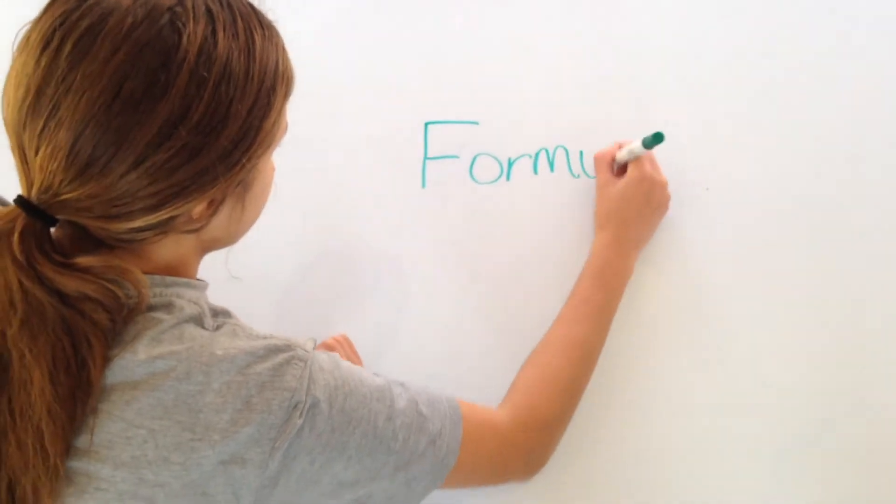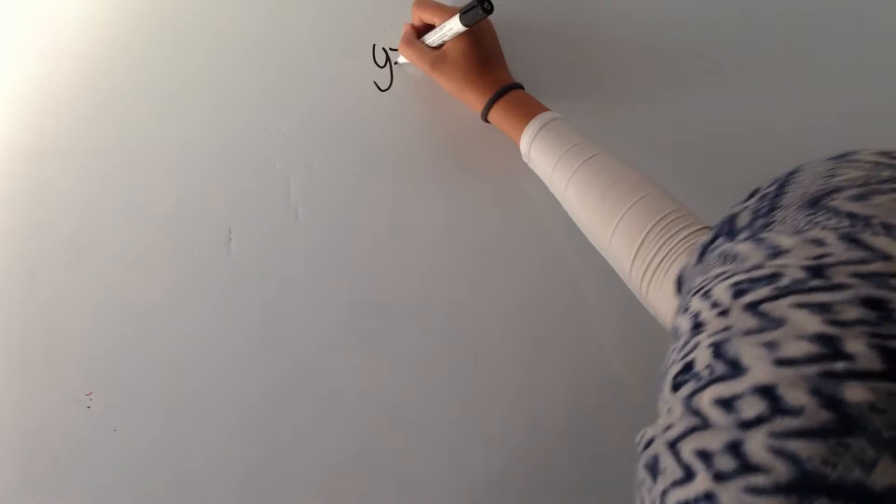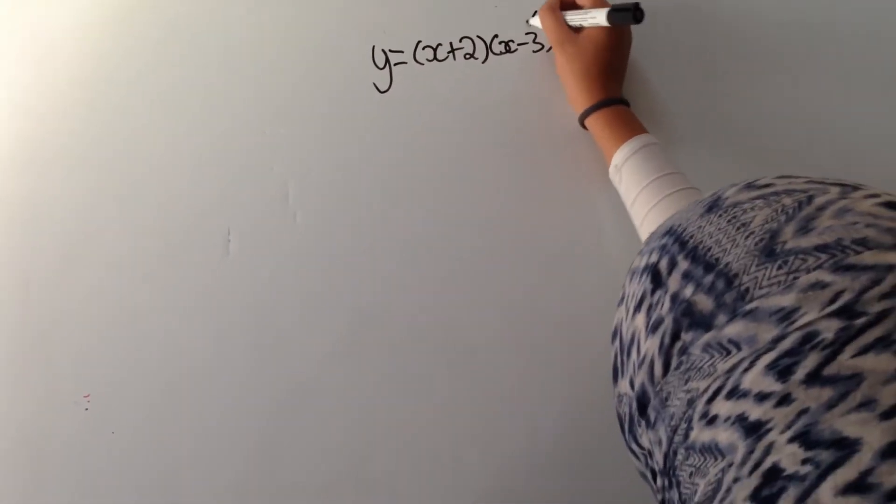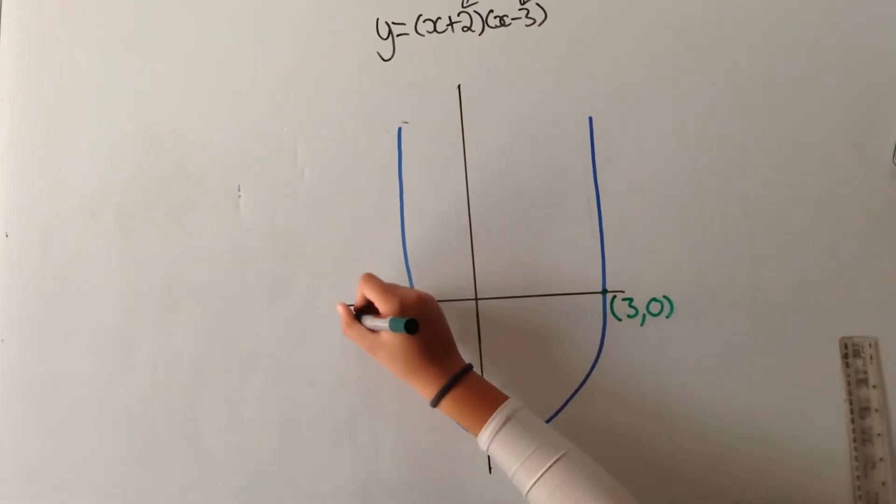The basic equation to find a parabola is y equals x squared. As you can see here, if you get y equals bracket x plus two bracket x minus three, then the two x-intercepts would be negative two comma zero and three comma zero.